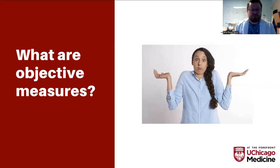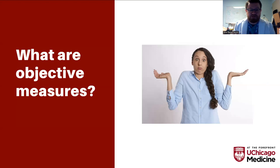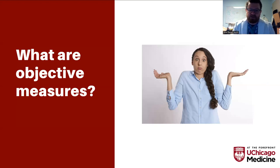First of all, let's start with what is an objective measure? Like a lot of things we do in audiology, many things patients come in with are subjective — meaning they're telling us what's going on with them. When we ask questions, we're getting subjective answers back. For example, if we ask a patient where does it hurt, that is a subjective question. We're relying on that patient to give us information that we can't confirm ourselves.